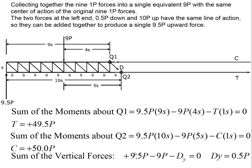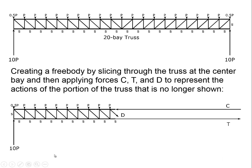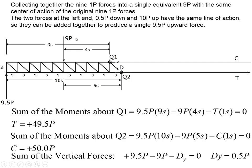We redraw the truss and combine the 9P forces with their center of action, and combine the 0.5P force with the 10P reaction to get a net 9.5P upward force. So we have 9.5P upward, 9P downward, and the forces C, T, and D representing the action of the removed truss portion. We pick two points Q1 and Q2 to take moments about. The choice of these points is informed by our desire to eliminate as many unknowns as possible. Q1 is the intersection of the lines of action of D and C; Q2 is the intersection of the lines of action of D and T.